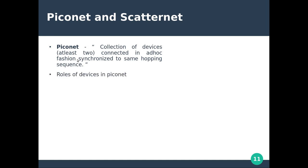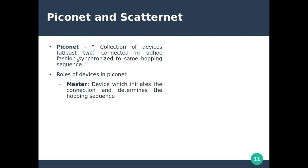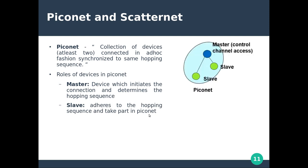Within a piconet, devices have two roles: master and slave. The master device initiates the connection and determines the hopping sequence, while slaves adhere to the master's hopping sequence and take part in the piconet. A piconet supports one master and up to seven active slaves, for a total of eight active devices.